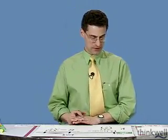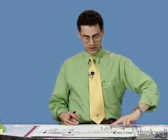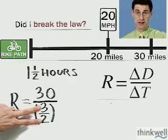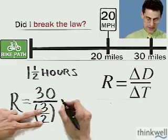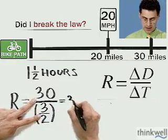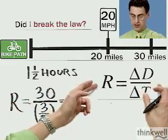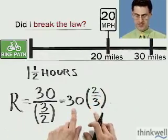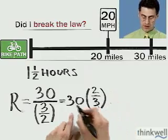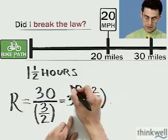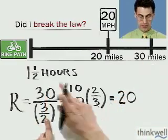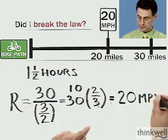To divide by a fraction, you invert and multiply. So 30 divided by three-halves becomes 30 times two-thirds. I can cancel: the 3 becomes 1 and the 30 becomes 10, so 10 times 2 equals 20. The units are miles per hour, so the rate is 20 miles per hour. Maybe I didn't break the law!